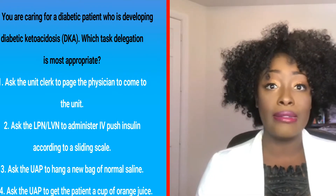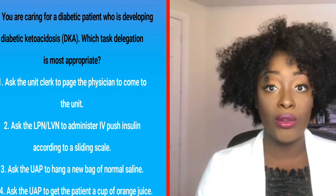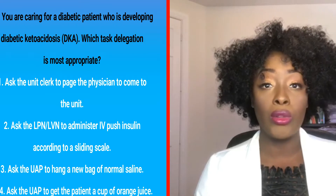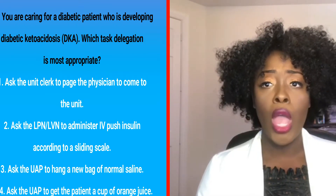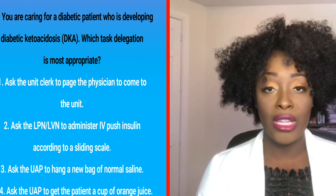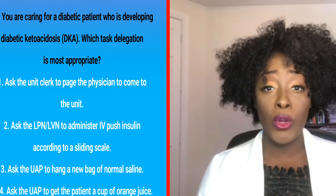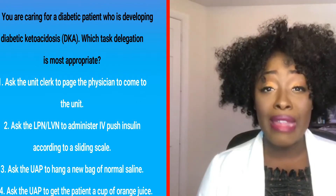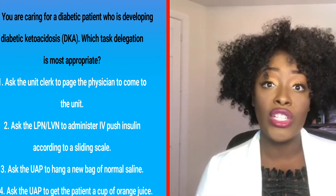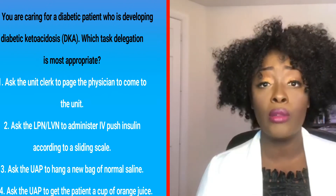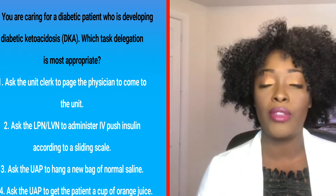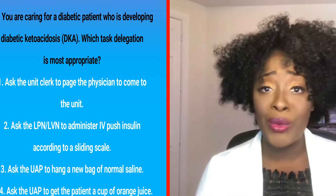The correct answer is number one. This patient is going through diabetic ketoacidosis, so you're going to ask the clerk to call the physician so you can get orders. Now let me explain why the other answers are incorrect. Choice two was to ask the LPN to do IV push insulin. If you haven't watched my priority and delegation video, I strongly urge you to — about 70 to 75 percent of NCLEX is based on priority and delegation. LPNs cannot do IV pushes.